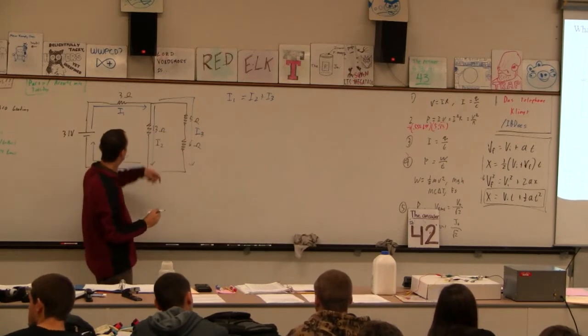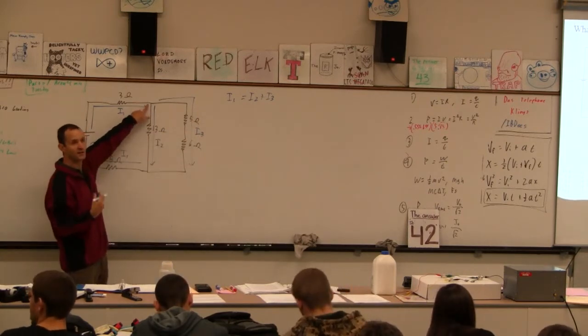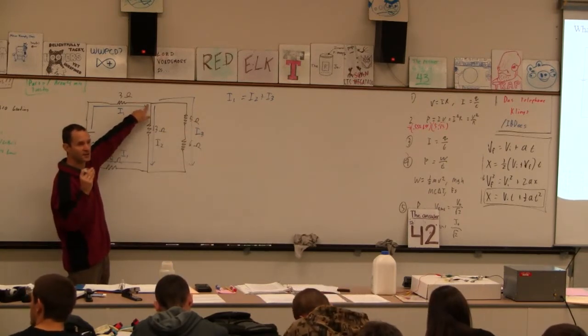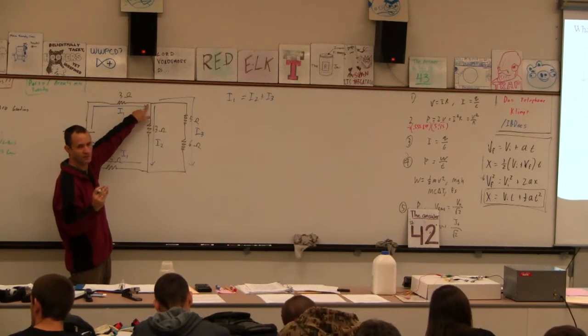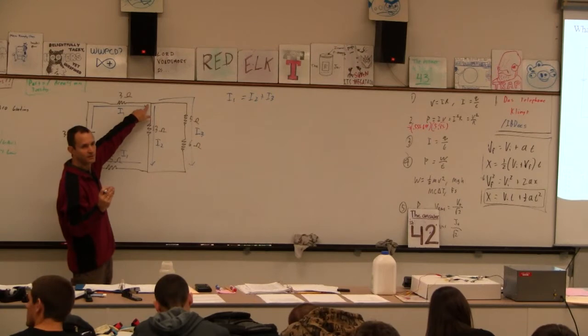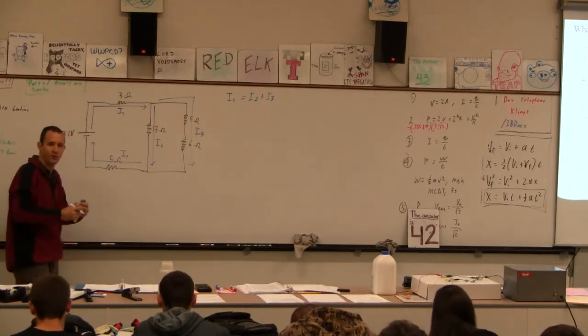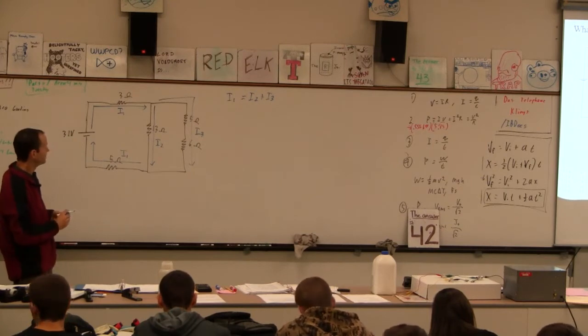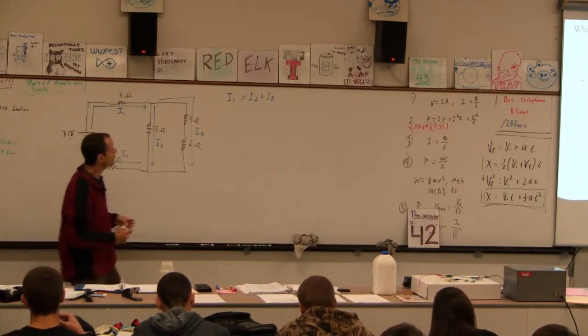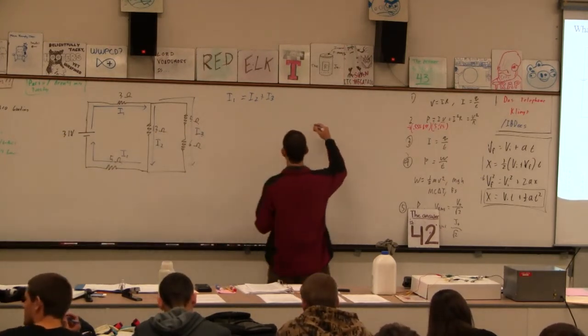So the first law says that for any junction, the sum of the currents flowing into the junction equals the sum of the currents flowing out of the junction. So this is just obvious. It's like conservation of matter. If the current flows in, then the current has to flow out.